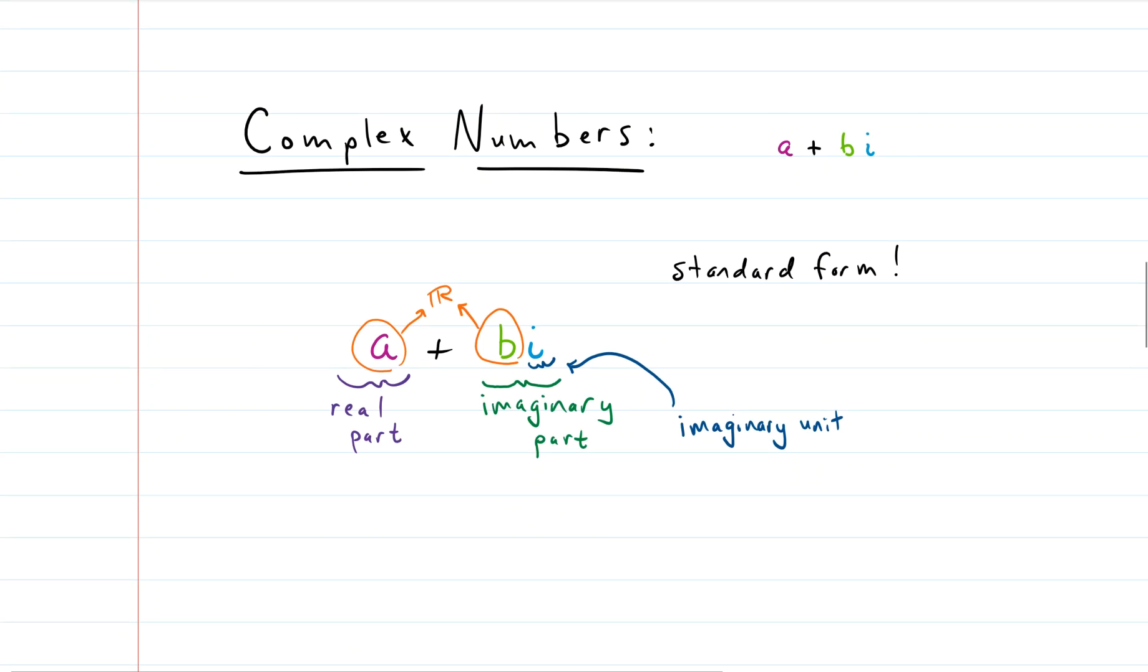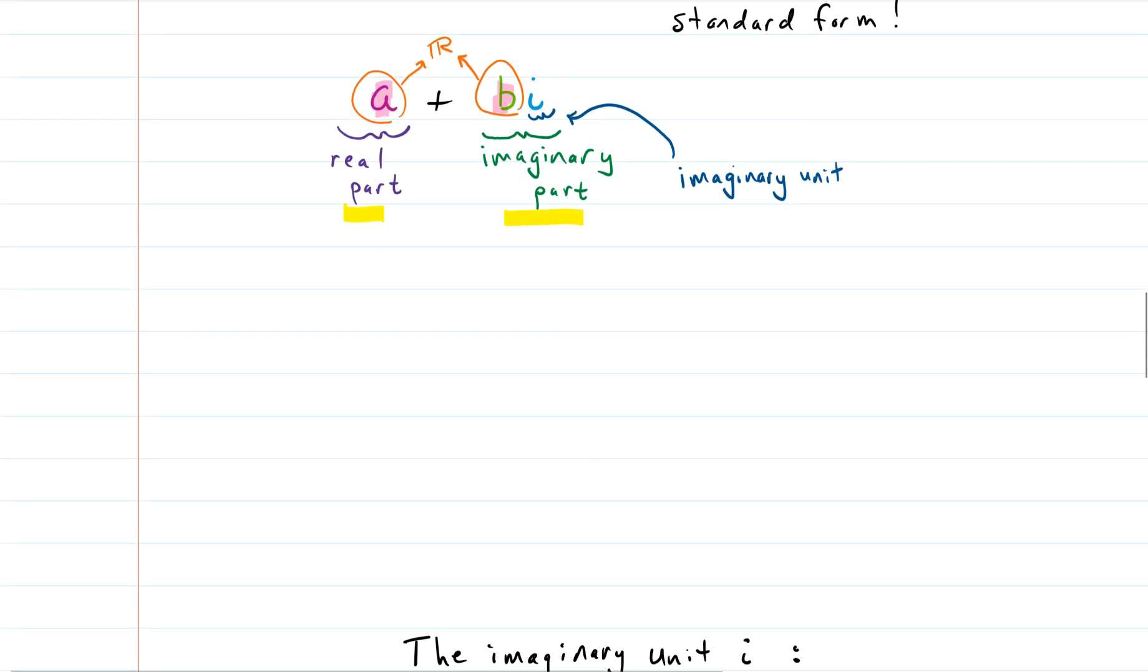Complex numbers: the standard form of a complex number is a plus bi. The a part is the real part, the bi part is the imaginary part. Specifically, the a and the b, those are real numbers themselves, and i is the imaginary unit. Standard form says that the real part comes before the imaginary part.